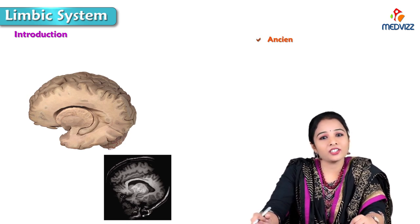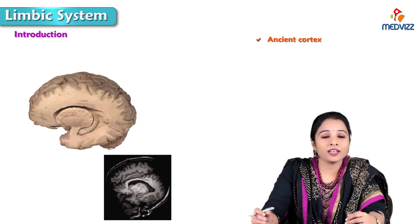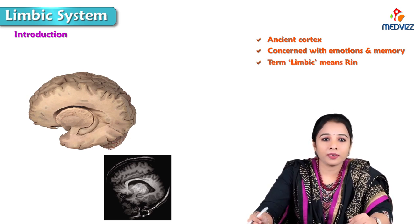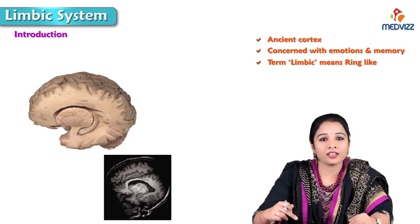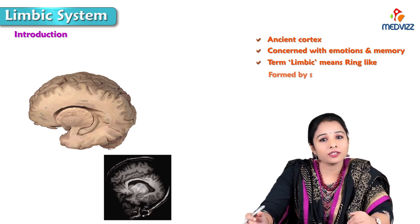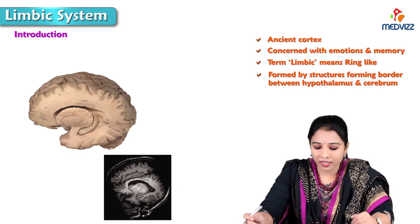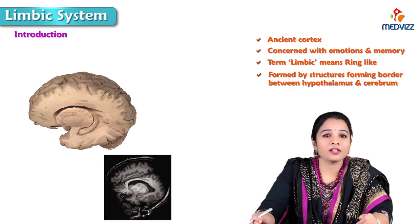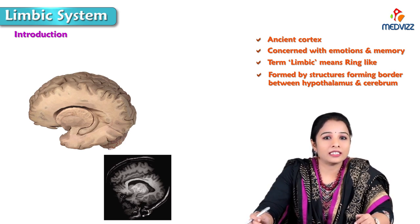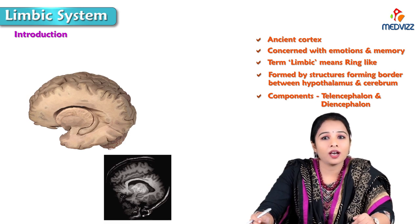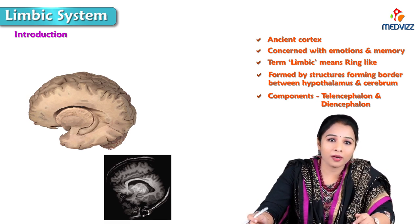The limbic system is an ancient kind of cortex concerned with emotions and memory. The term limbic means ring-like. It is the border formed by the structures which form a border between the hypothalamus and cerebrum. We can say it is a border between the diencephalon and the telencephalon. The components of the limbic system are partly from the telencephalon and partly from the diencephalon.